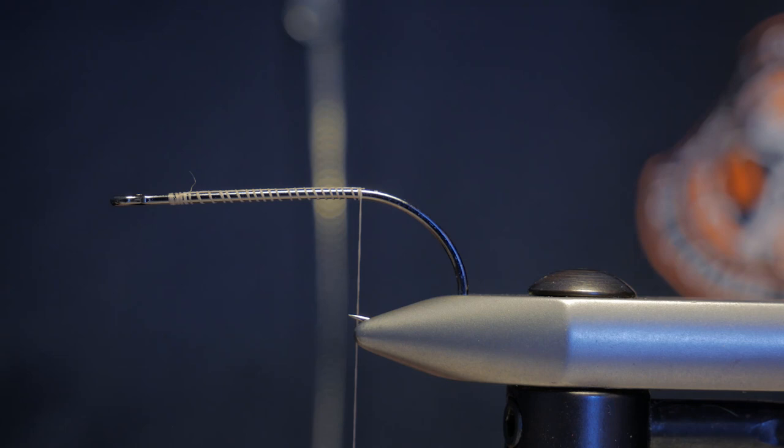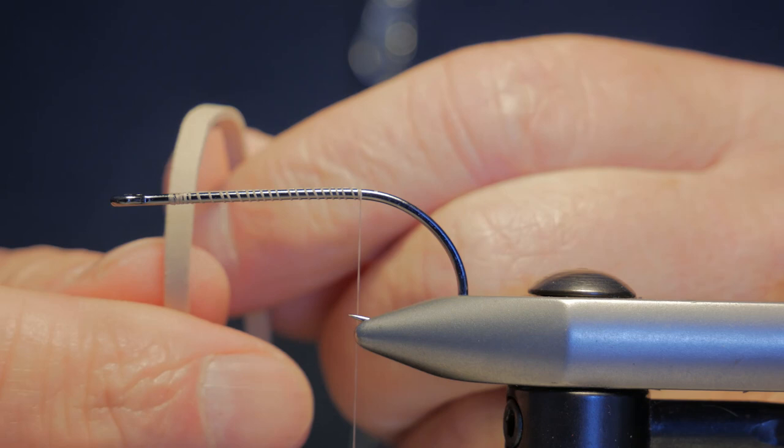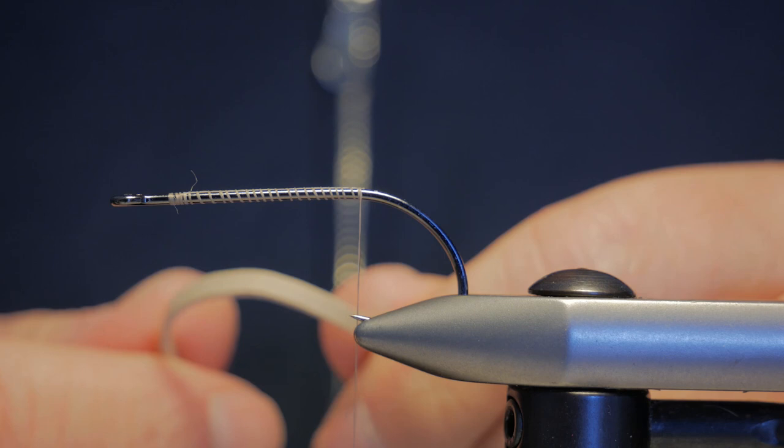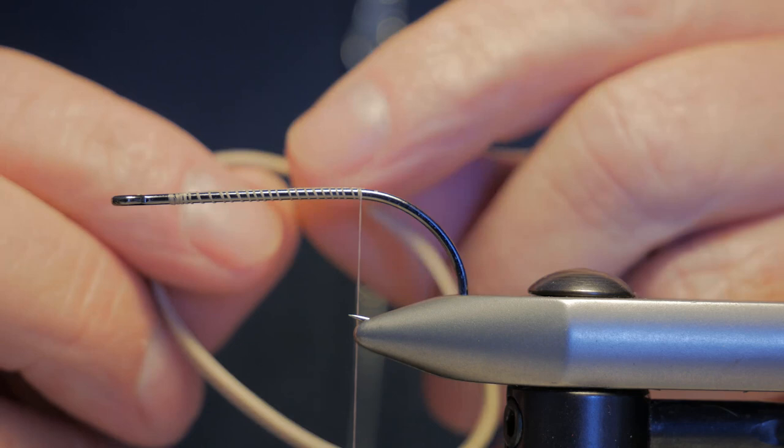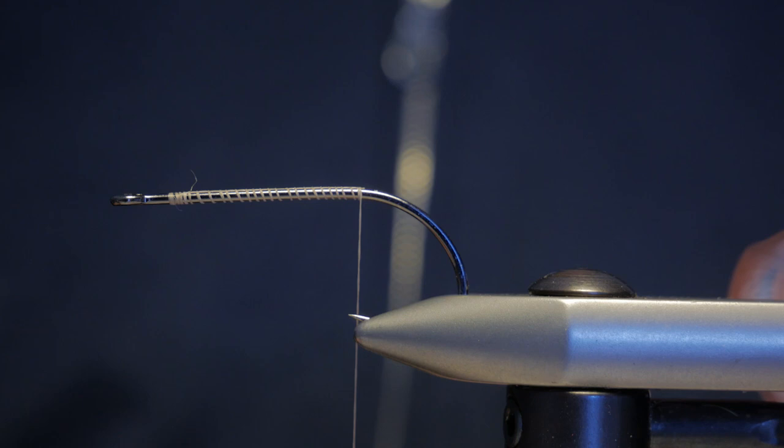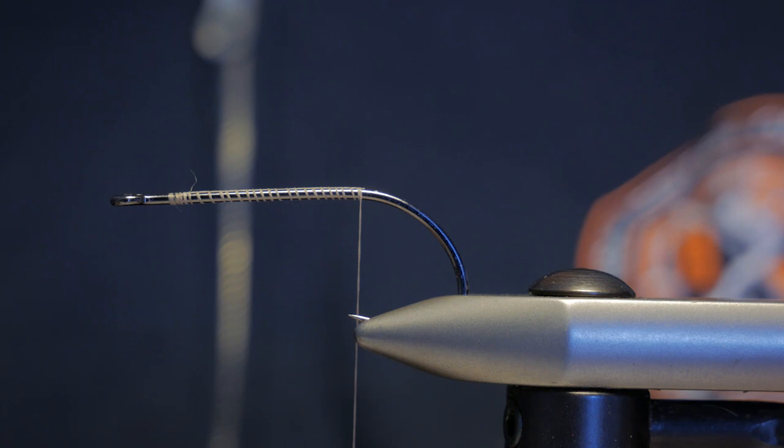For the tail, I just use elastic bands. Just your basic tan-colored elastic band. You want to pick one that is suitable to the size of the hook that you're using. This is a 1-Ott hook, and this elastic band is probably about 2mm wide, 2.5mm wide. Maybe I'm going to say an eighth of an inch, if you're in the archaic English measurement system still.